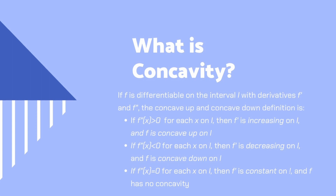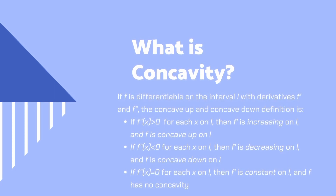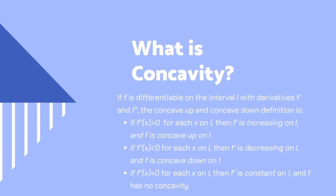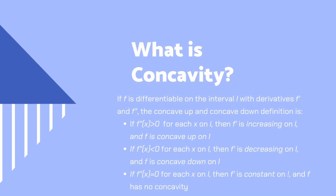Here you can see the definition. Whenever the function is concave up, the second derivative is positive, which also means that the first derivative is increasing. And when a function is concave down, it means that the second derivative is negative, which means the first derivative is decreasing.